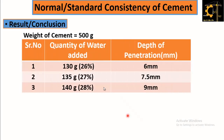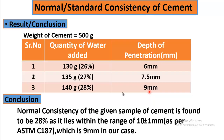For the conclusion: the weight of cement for this experiment is 500 grams. In trial 1, we took 26 percent water — 130 grams — and the depth of penetration was 6 mm, which is lower than our range. In trial 2, we took 27 percent — 135 grams — and the penetration was 7.5 mm. When we increased to 28 percent — 140 grams — the penetration came to 9 mm, which is within the range. Therefore, the normal consistency of the given sample of cement is found to be 28 percent, as it lies within the range of 10 ± 1 mm as per ASTM C187.